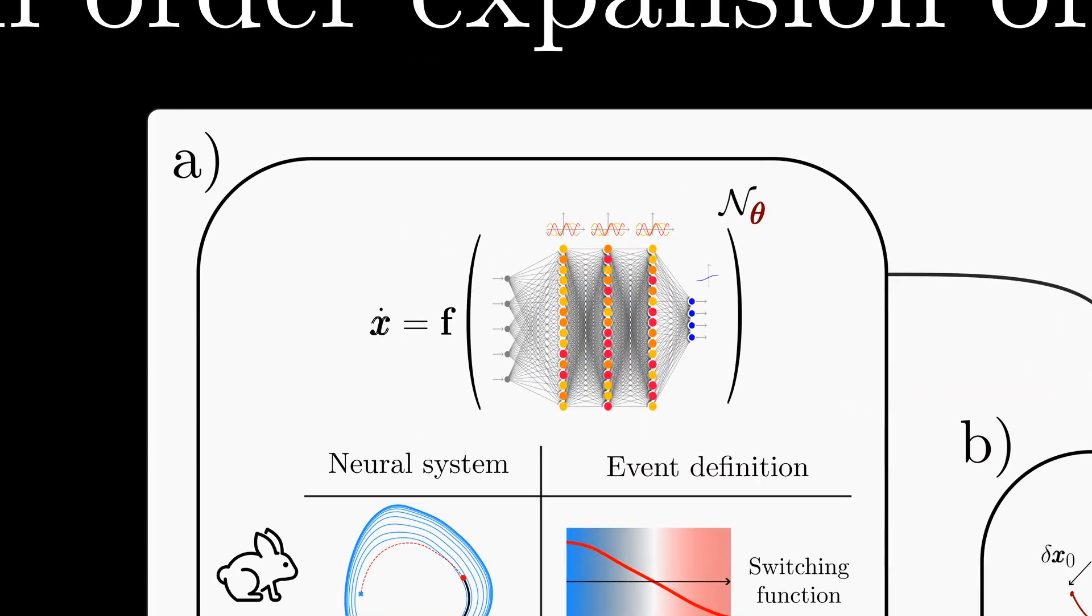or in other words, systems whose dynamics contain a neural network somewhere on the right-hand side of its equations are called Neural ODEs, short for Neural Ordinary Differential Equations. And recently, these systems have attracted a lot of attention.